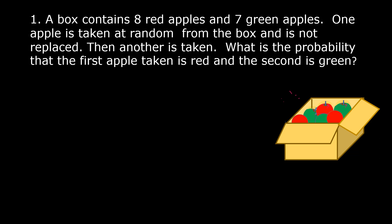Example 1: A box contains 8 red apples and 7 green apples. One apple is taken at random from the box and is not replaced. Then another is taken. What is the probability that the first apple taken is red and the second is green? Let us first find the number of apples. 8 plus 7 is equal to 15, so the total number of apples is 15.